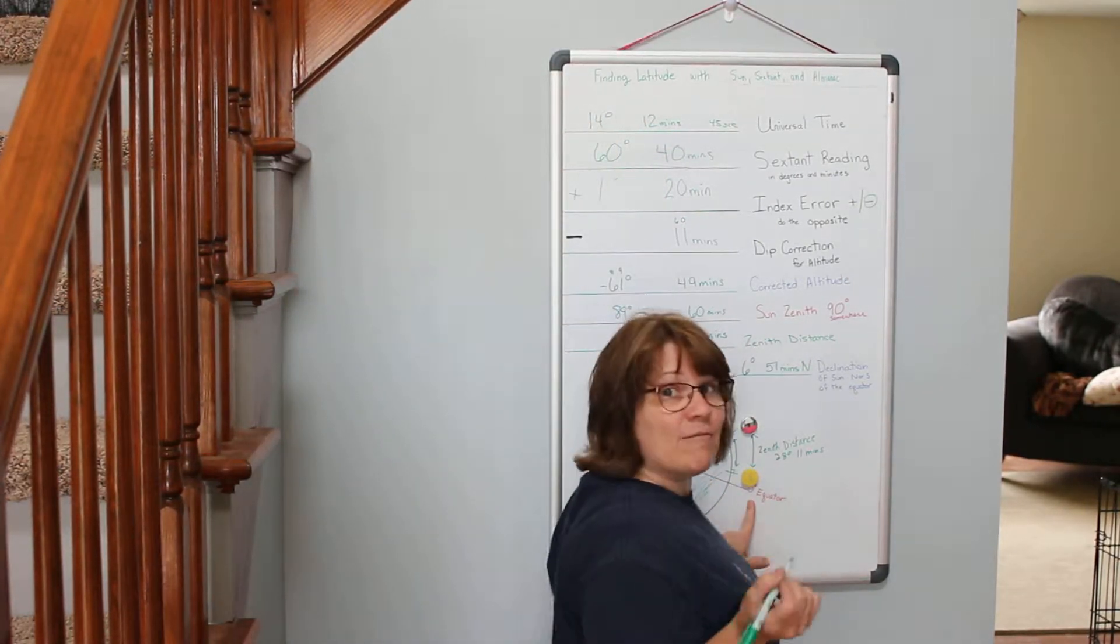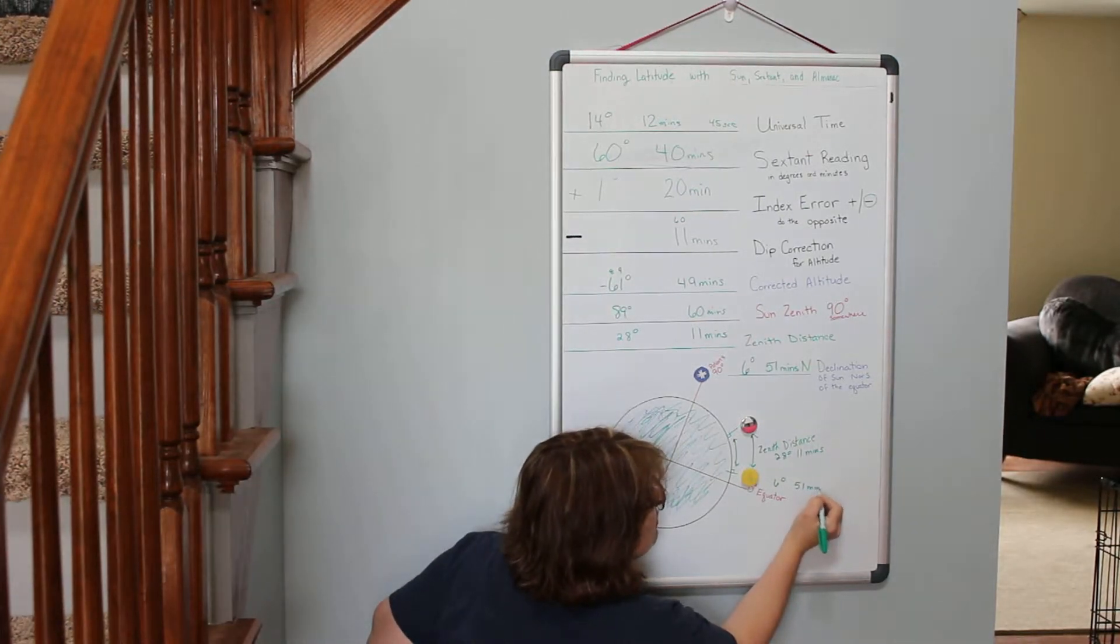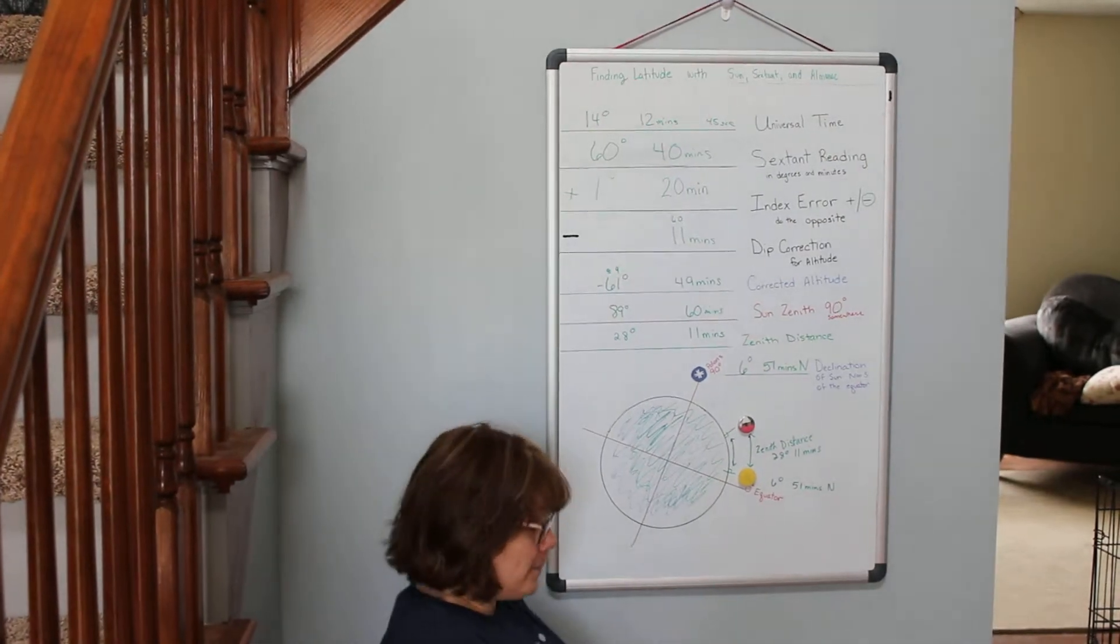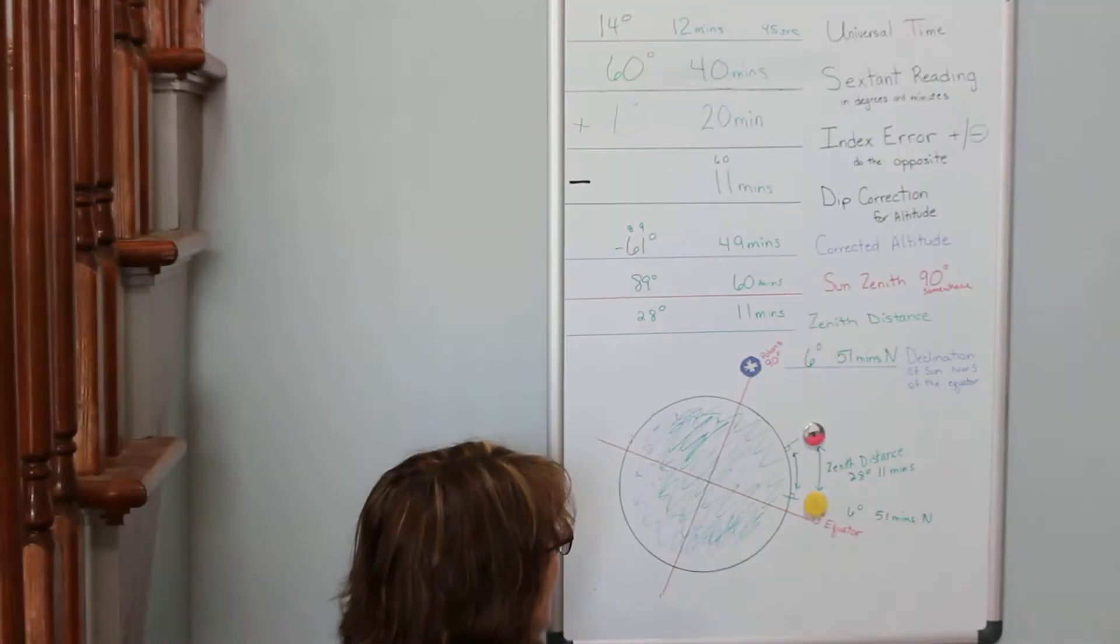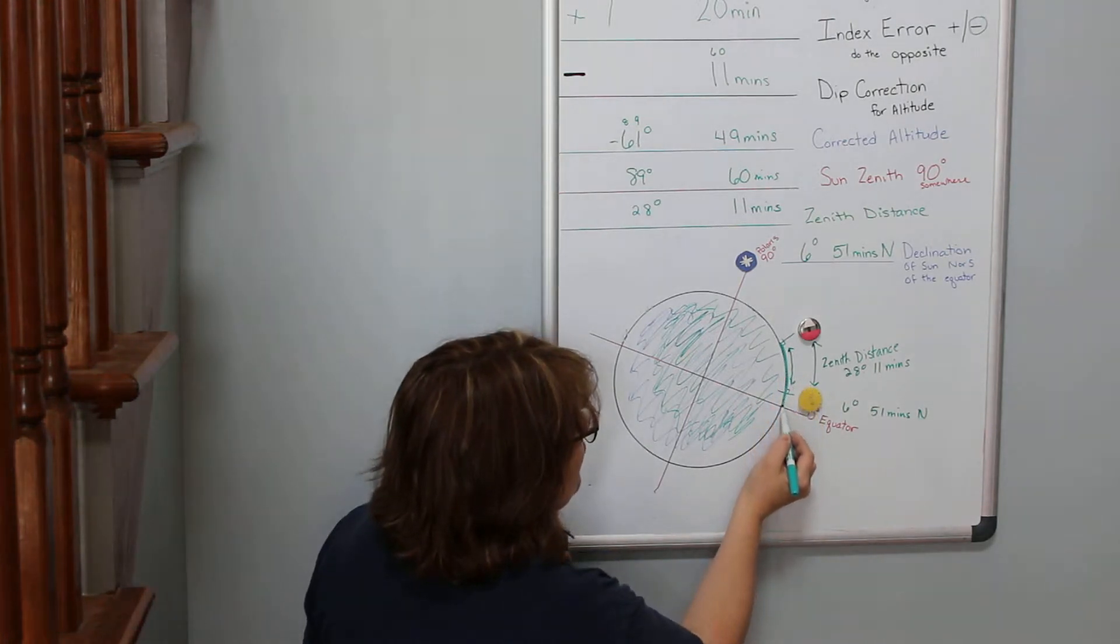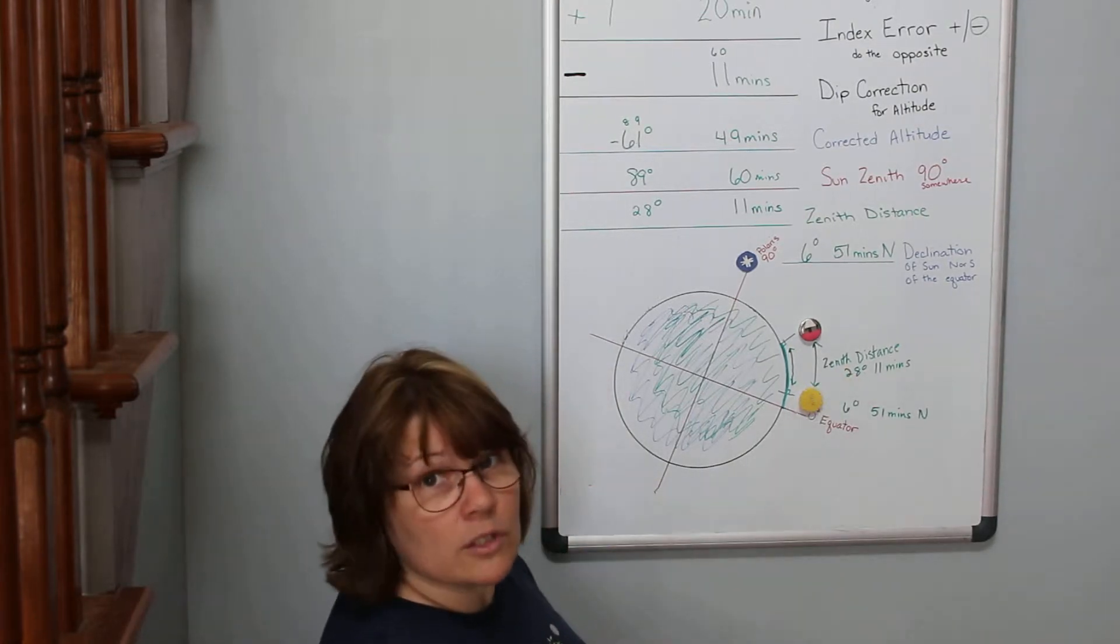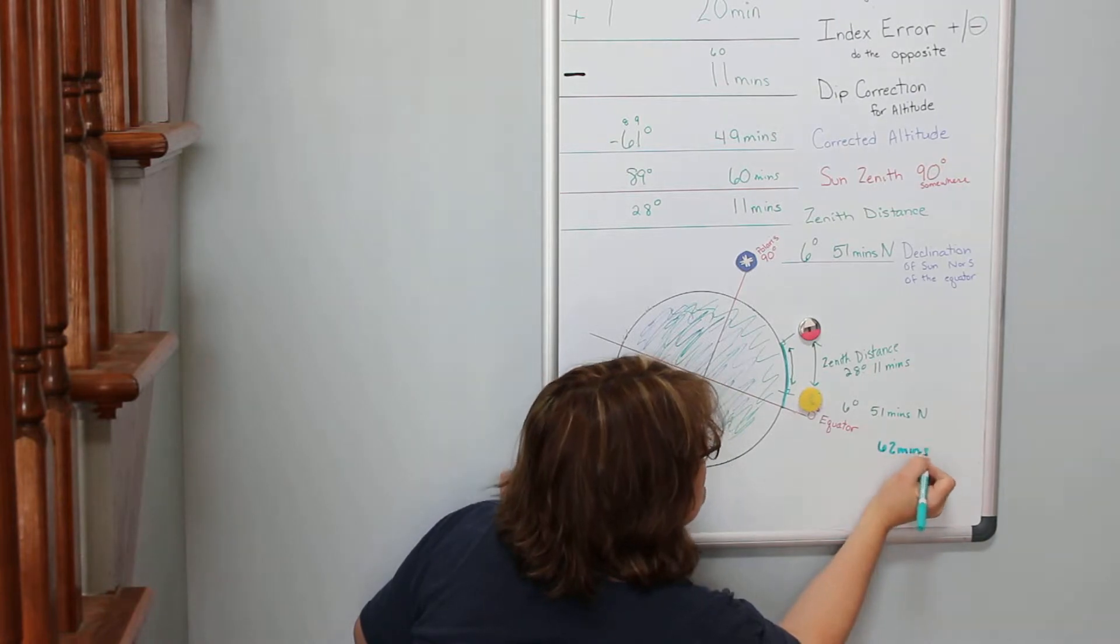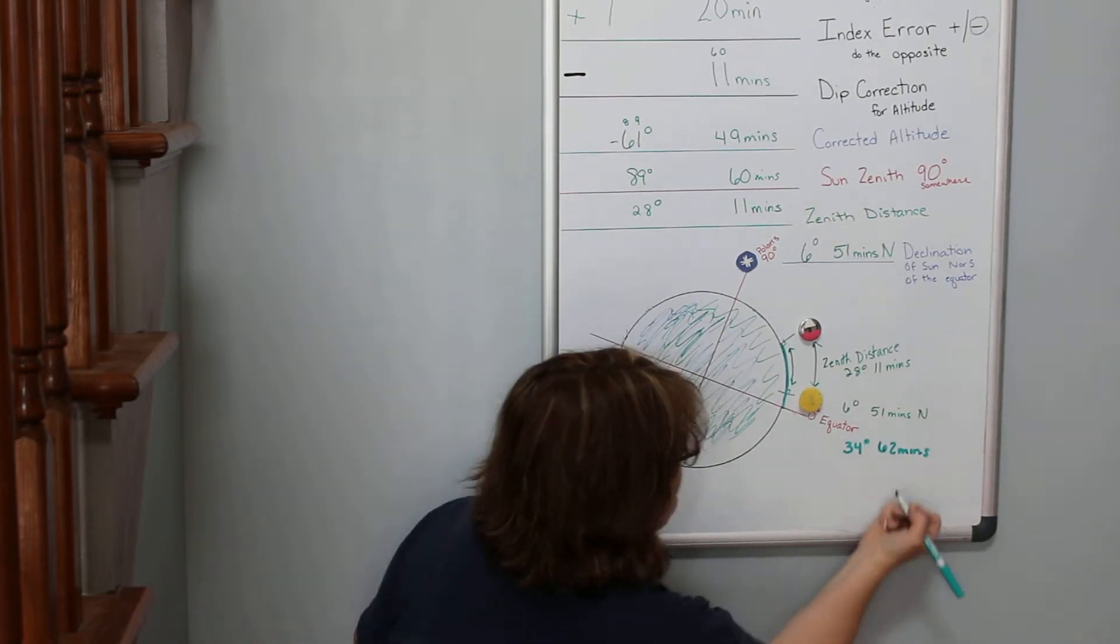And I also know from this handy dandy almanac how far the sun is from the zero mark of the equator. So right here I have my declination distance from the nautical almanac that says the sun is 6 degrees and 51 minutes north of my equator. So I want to know how far I am from the equator. I know this much of it to the sun and I know from the sun to me. All I have to do is add them. I take my 11 minutes and 51 minutes and I've got 62 minutes, and I take my 28 degrees and my 6 degrees and I've got 34 degrees and 62 minutes.